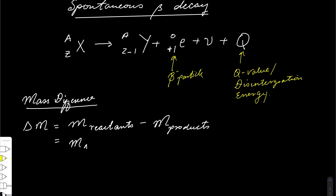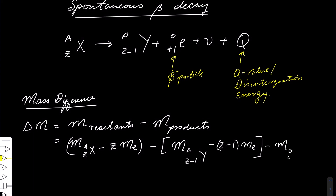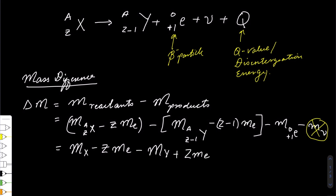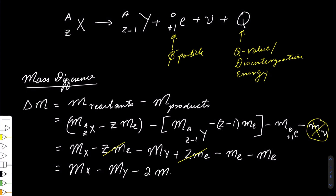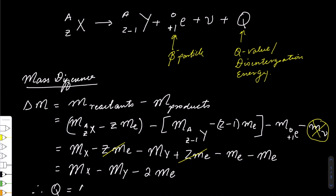In beta plus decay we follow the same process as beta minus, except now we are emitting a positron. We subtract the mass of reactants from the mass of products and ignore the mass of the neutrino as before. Rearranging this equation, we find that the mass difference during beta plus emission is given by the atomic mass of the parent nucleus minus the atomic mass of the daughter nucleus minus 2 times the mass of an electron. We then multiply the rest mass difference by c squared to get the disintegration energy.